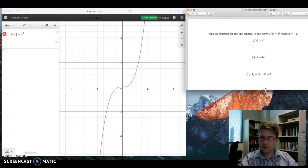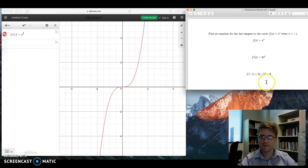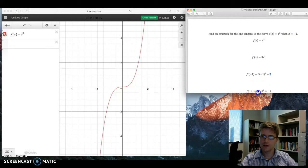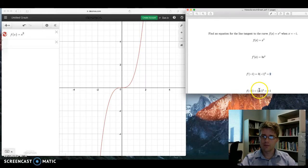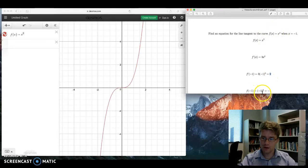So we're going to use this information to see if we can graph this using Desmos. So first, when x is negative 1, I need one additional piece of information. I need to know the actual function output when x is negative 1. So I'm going to plug in negative 1 to the original function here. Of course, negative 1 quantity cubed gives me negative 1, an output of negative 1.